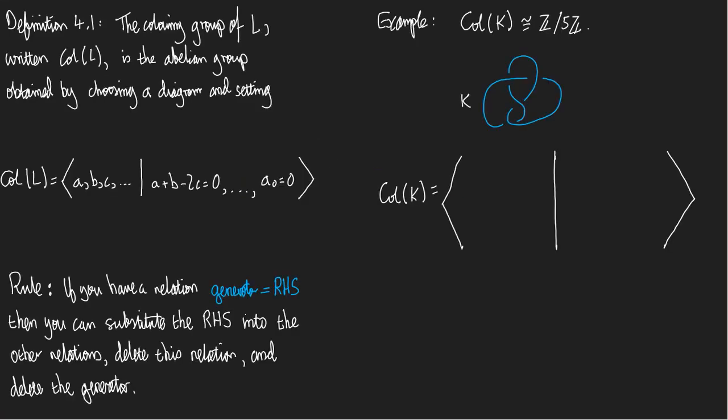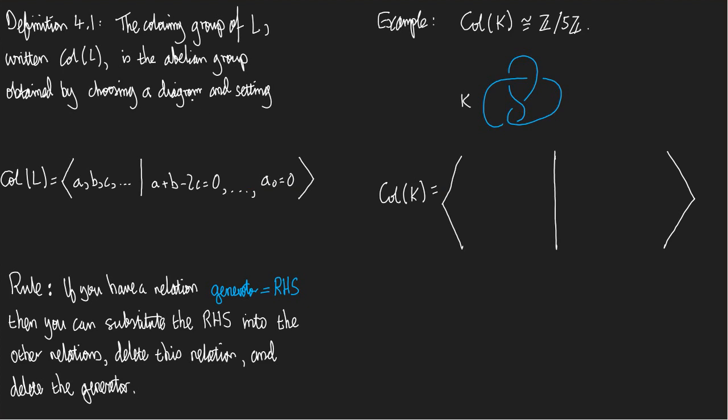So, here's how we go. This is the definition, Definition 4.1 from the notes. The colouring group of L, written col(L), is the abelian group obtained by choosing a diagram. As usual, we're choosing a diagram, and then we define that the colouring group of L is the following thing. I'll read out this symbol here, this right-hand side, as a sentence.